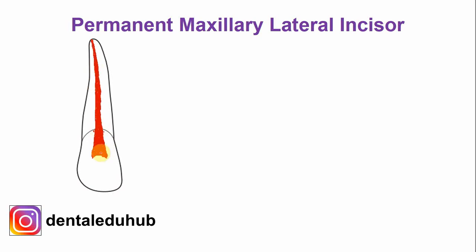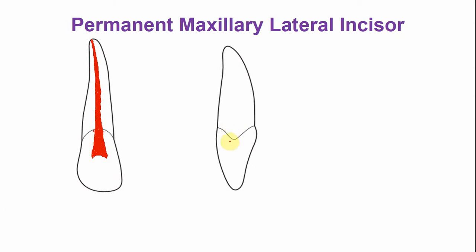In a labio-lingual section, the pulp point is usually prominent. The pulp chamber is narrow in the incisal region, and in the middle region it becomes wide. The pulp cavity becomes tapered, and this is a single pulp canal.